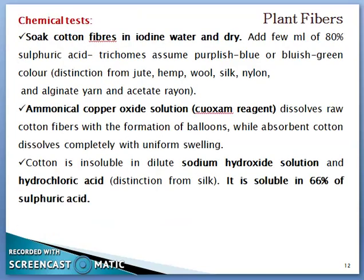Chemical tests for cotton: cotton fibers are identified using iodine water — treat fibers with iodine water, dry them, then add 80% sulfuric acid; the trichomes assume a purplish blue or bluish green color. Jute, hemp, wool, silk, nylon, alginate yarn, and acetate rayon will fail to give a positive result in this test. Using ammoniacal copper oxide solution, also called coxam reagent, cotton fiber dissolves with formation of balloons, while absorbent cotton dissolves completely with uniform swelling. These are very important tests that students should know for examinations.